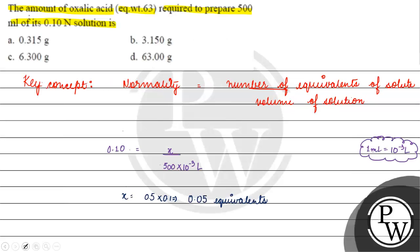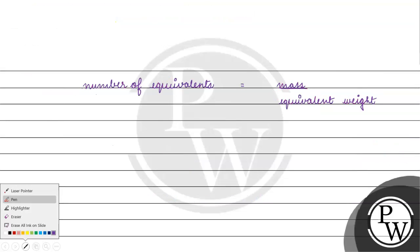Number of equivalents, how much is it? 0.05.